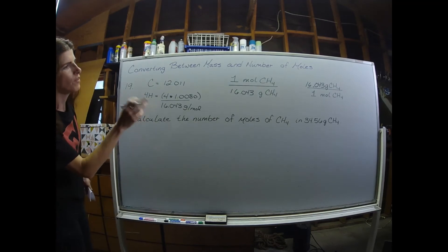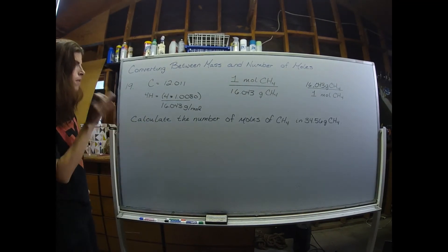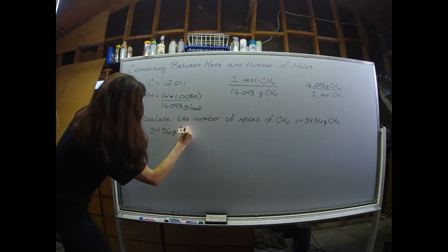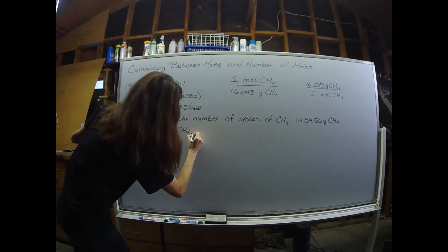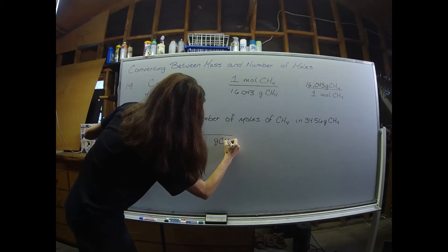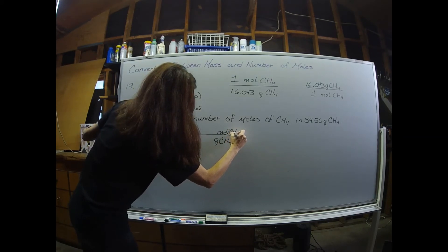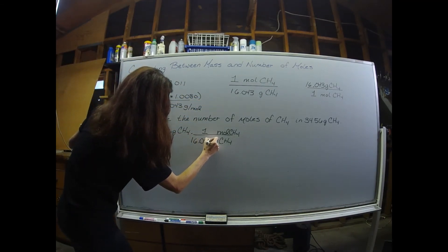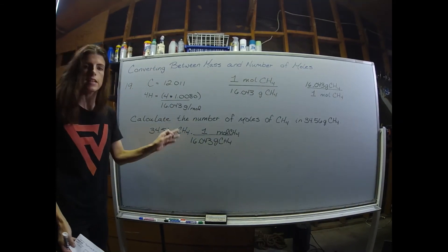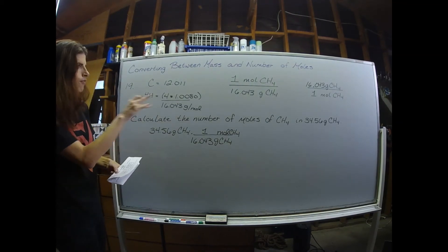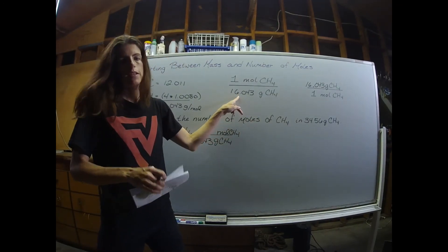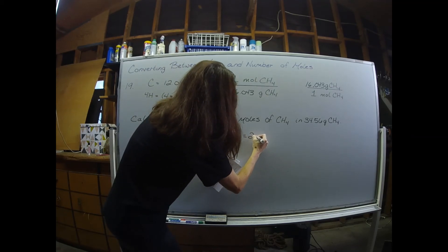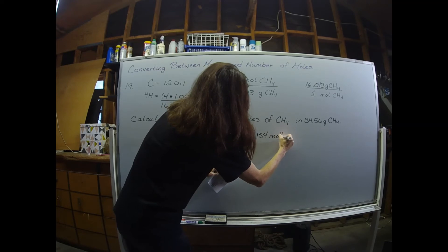Now we're ready to start the problem. They told us we have 34.56 grams of CH₄, and we're asked to convert this into moles. So I want to get rid of grams, and in my numerator I'll have moles of CH₄. One mole of CH₄ has 16.043 grams, so we're going to do 34.56 divided by that molar mass. With four sig figs, I report my final answer as 2.154 moles of CH₄.